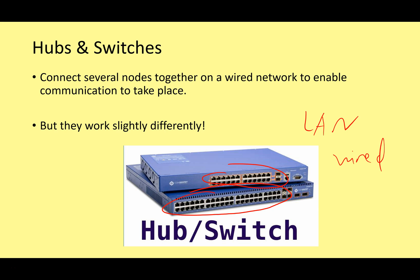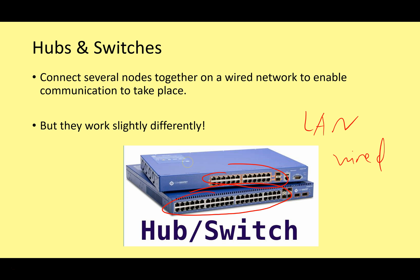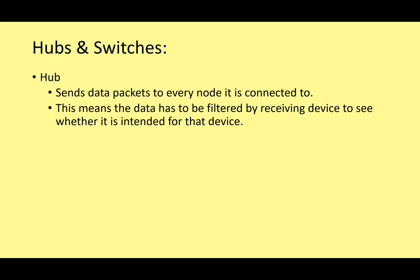Although hubs and switches can look very similar and have similar functionality, they do work a little differently. A hub sends data packets to every node it is connected to. This means that when you send data using a hub, that data gets sent to every single device connected to the hub. If you're sending an email, it gets sent to every single computer connected to the hub. The data then has to be filtered by the receiving device to check whether it's intended for that device - creating security problems.